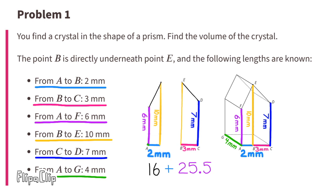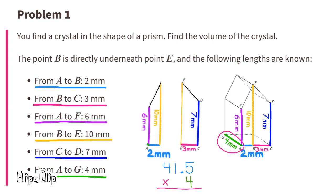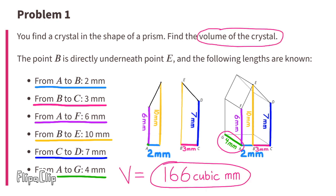We can add these two areas together: 16 plus 25.5 equals 41.5. Now to find the volume of the crystal, we need to multiply the area of the base times the height, so 41.5 times 4. 41.5 times 4 is 166, so the volume of this crystal is 166 cubic millimeters, or 166 millimeters to the third power.